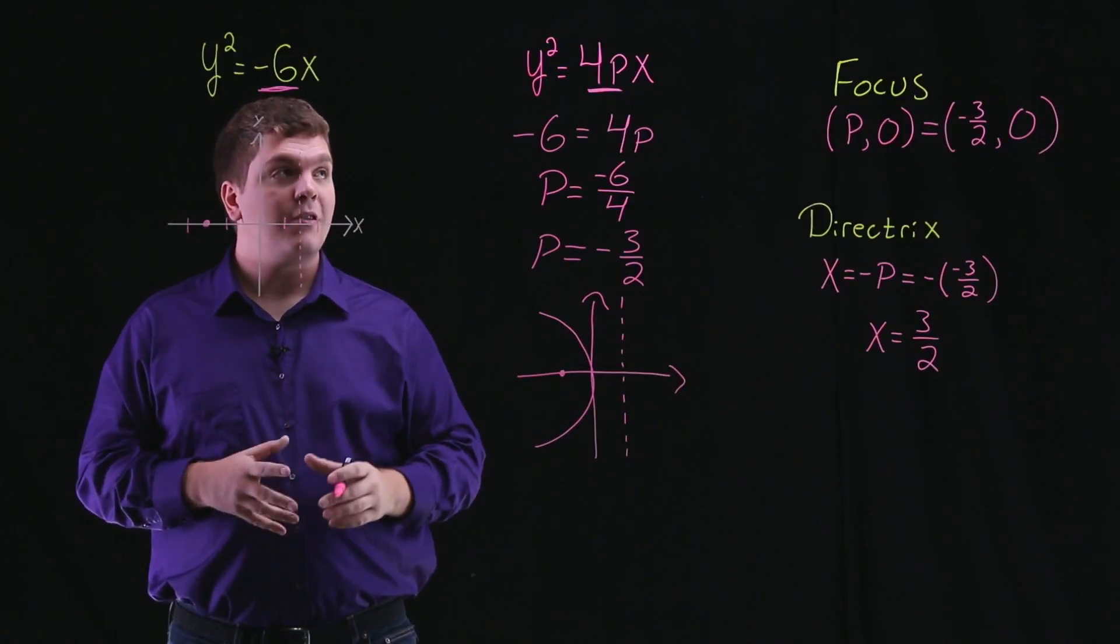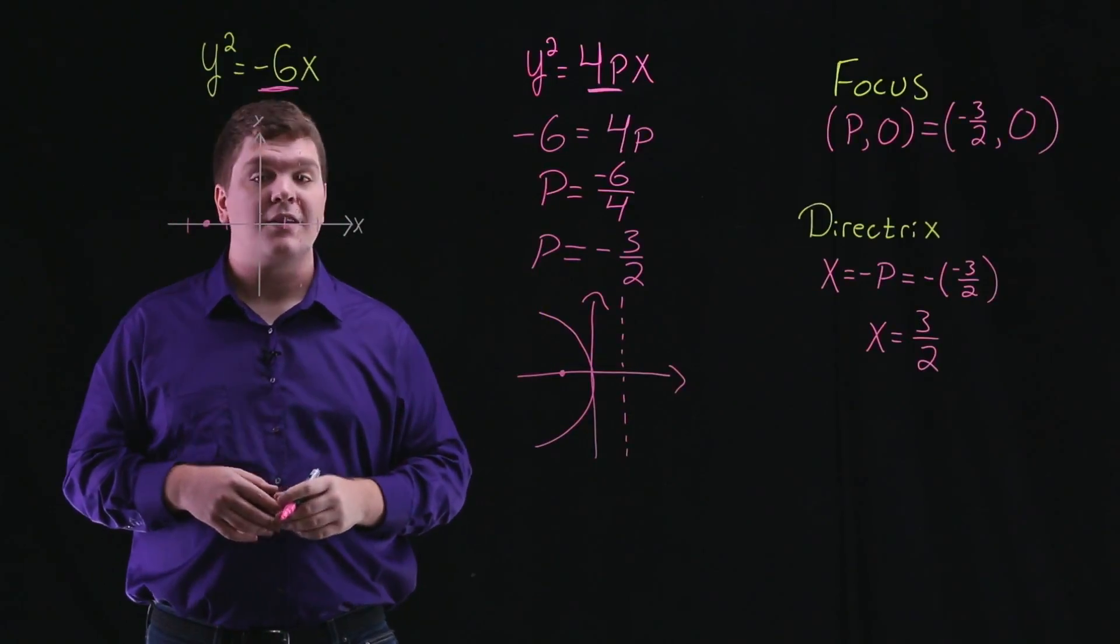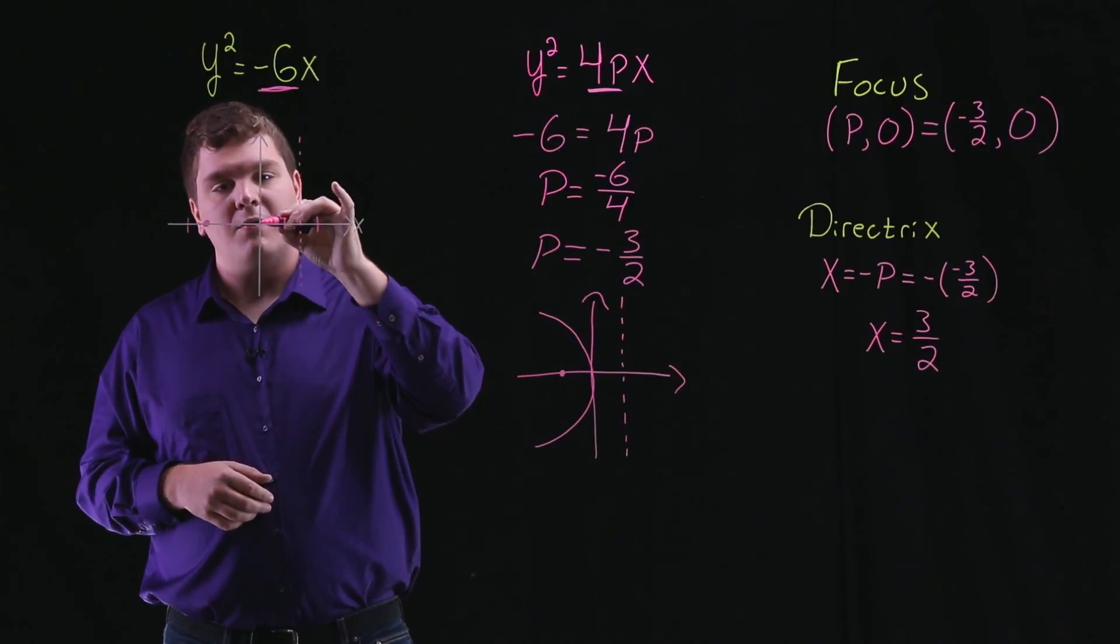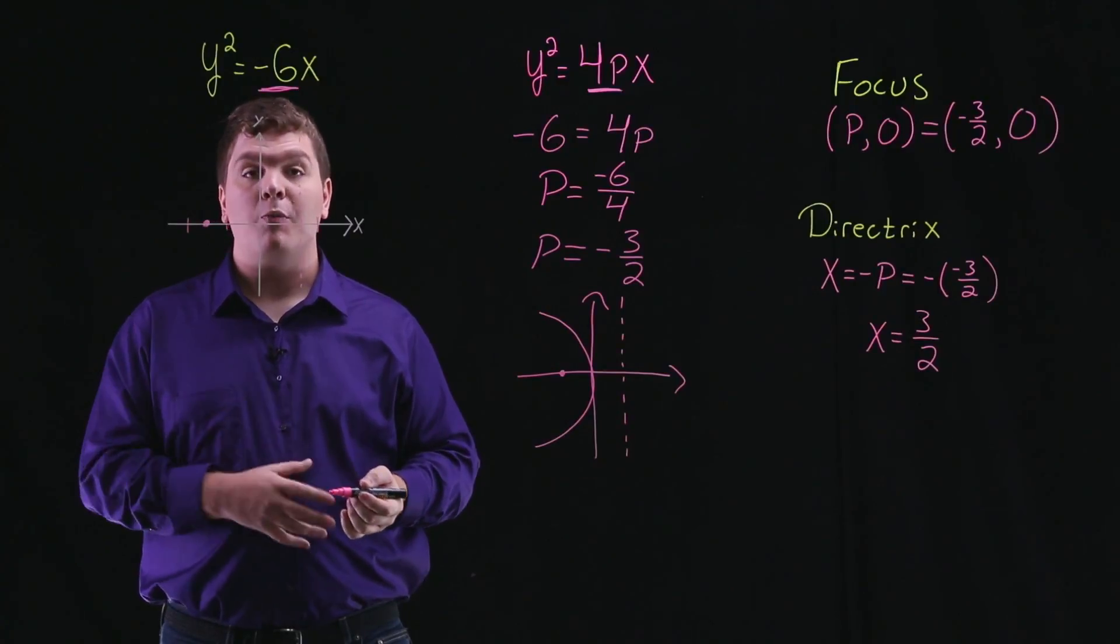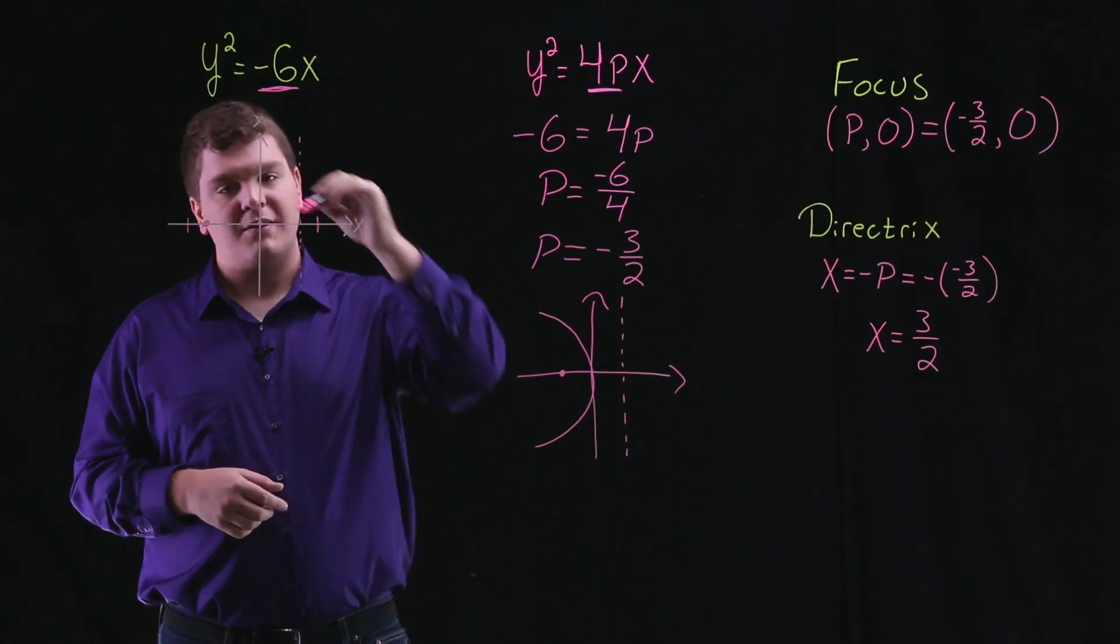In this section, since the vertex of all of our conic sections is at the origin, we also know that we're going to pass through the origin. Now we just want to imagine our parabola opening towards the left, as I have sketched down here.